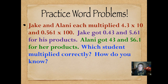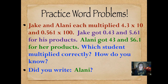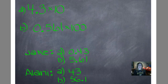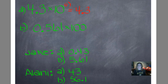Write down which student multiplied correctly and give your proof. Go ahead and push pause, then push play when you're ready. Don't be afraid of making mistakes — part of the fun in math is taking risks and playing with numbers. Sometimes we get it right, sometimes we make mistakes; we just keep trying. Did you write Alani? Let's prove it. Here's the first problem labeled A: 4 and 3 tenths times 10. There's one zero, so we move the decimal one place to the right. Our final answer for that one is 43.